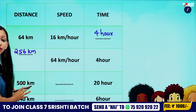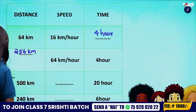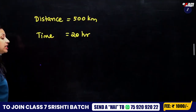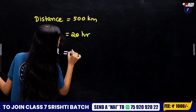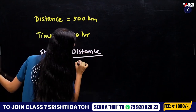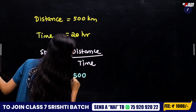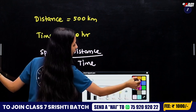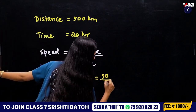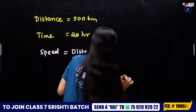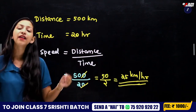The distance is 500 km, the time is 20 hours, and we have to find the speed. Speed is equal to distance divided by time — 500 divided by 20. We simplify: 50 divided by 2 equals 25. The answer is 25 km per hour.